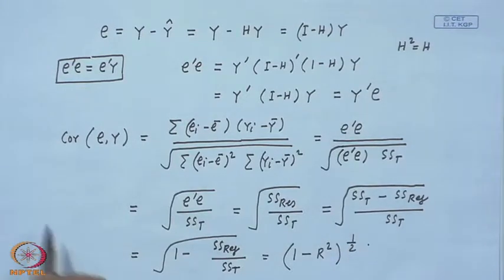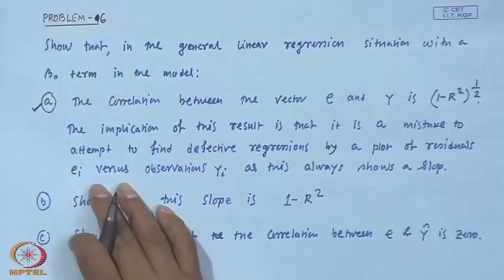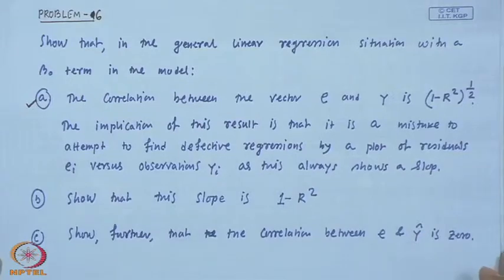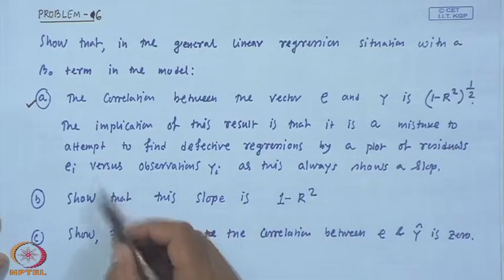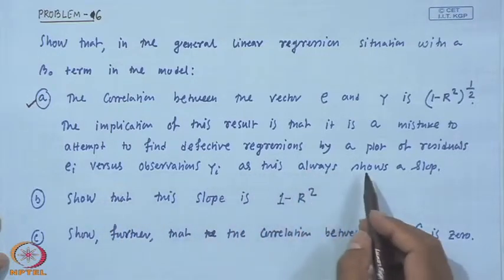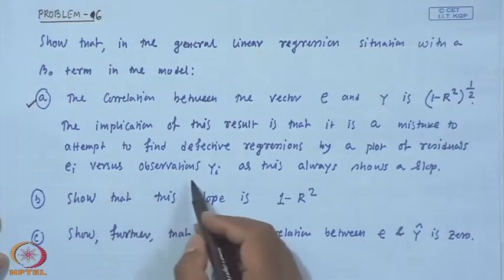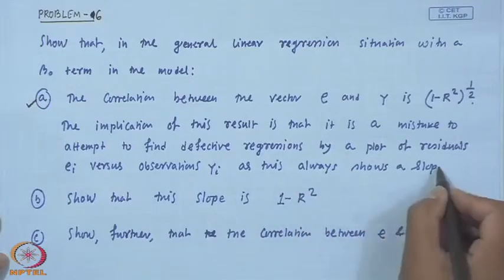We proved that the correlation between E and y is the square root of 1 minus R-squared. So we have solved part (a) of this problem. The implication of this result is that it is a mistake to attempt to find defective regressions by a plot of residual e_i against the observation y_i, as this always shows a slope.